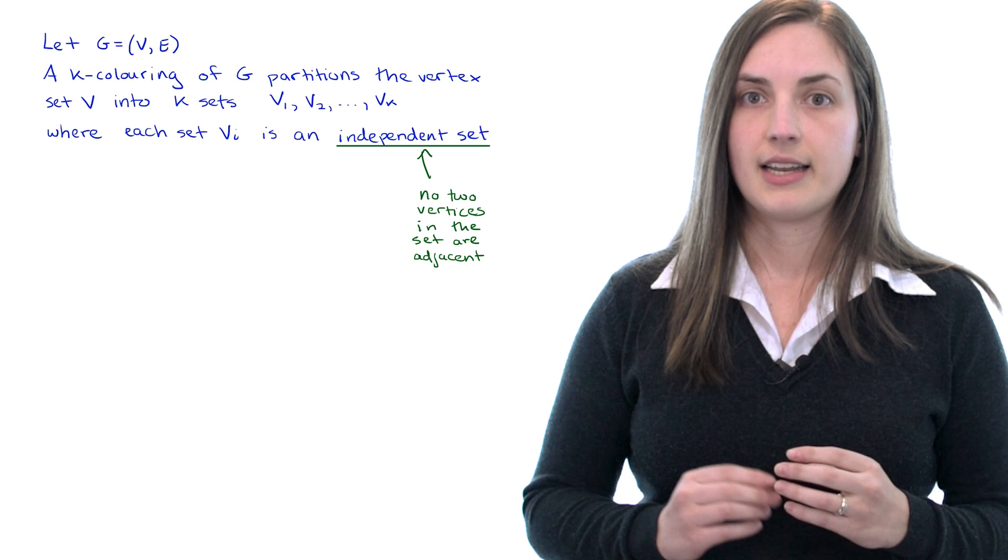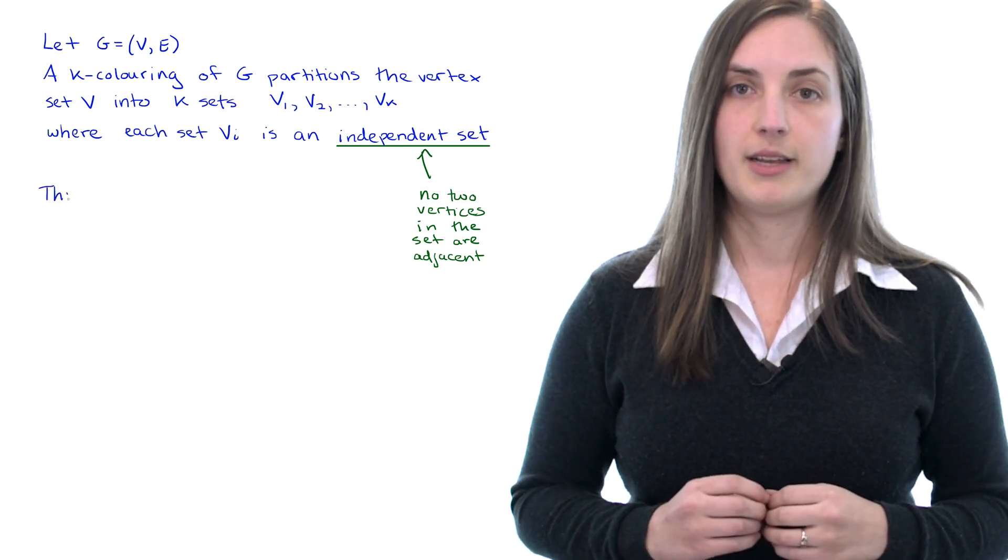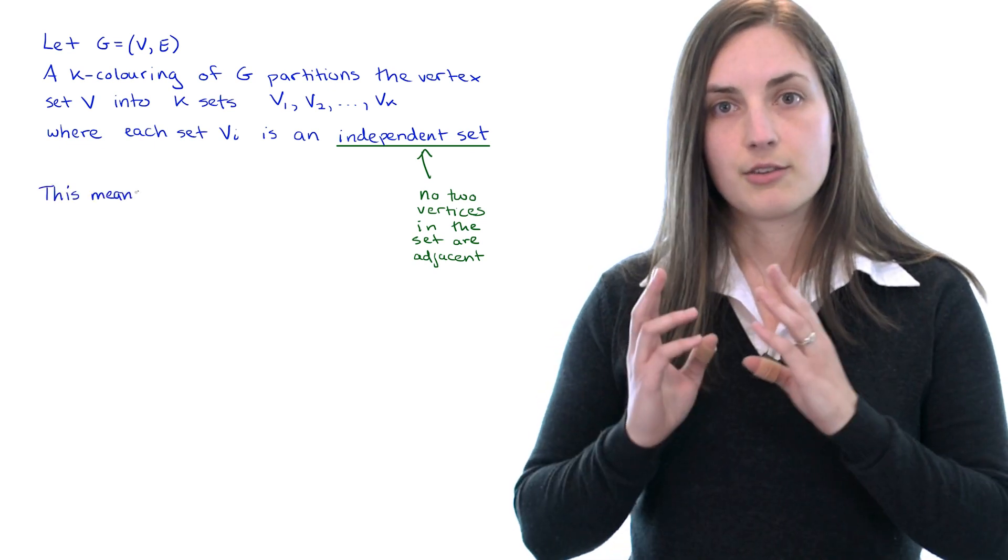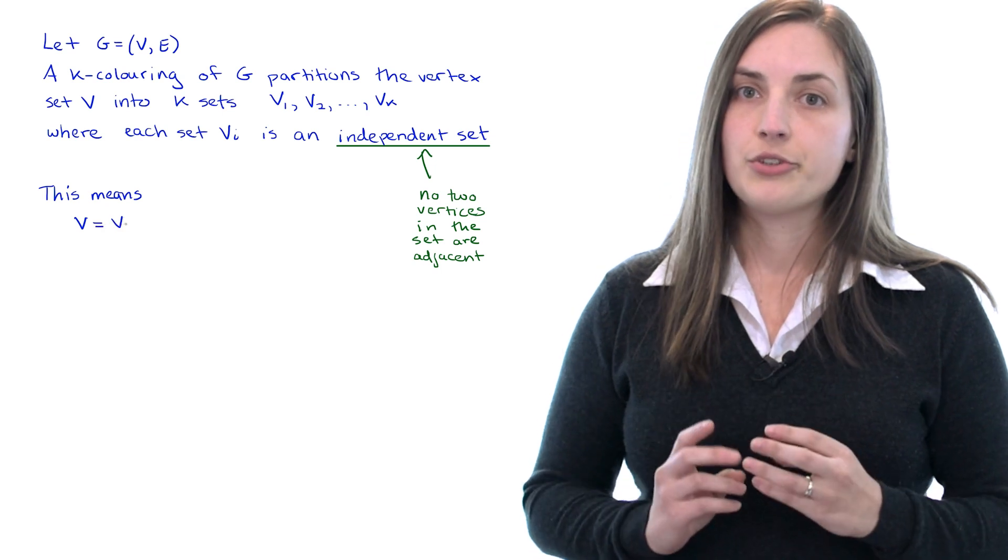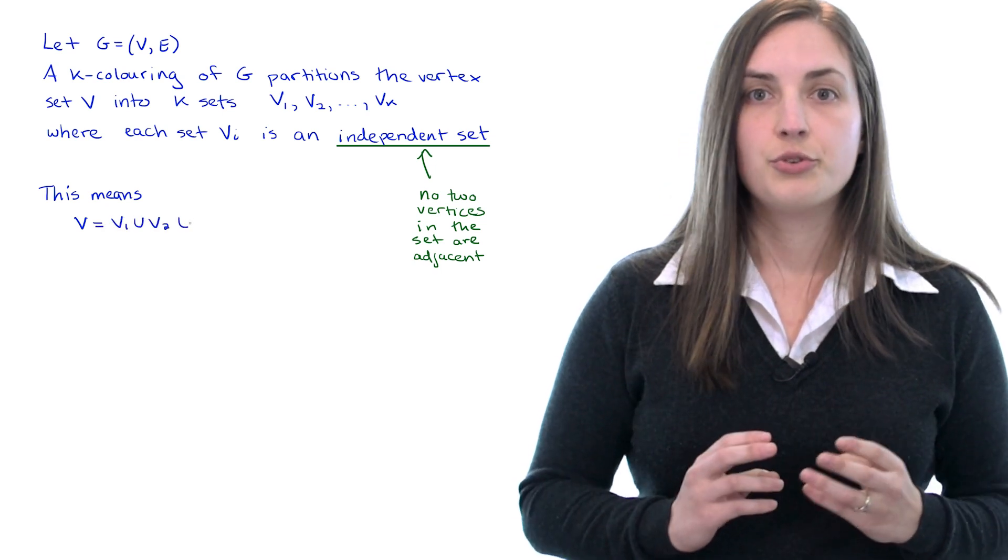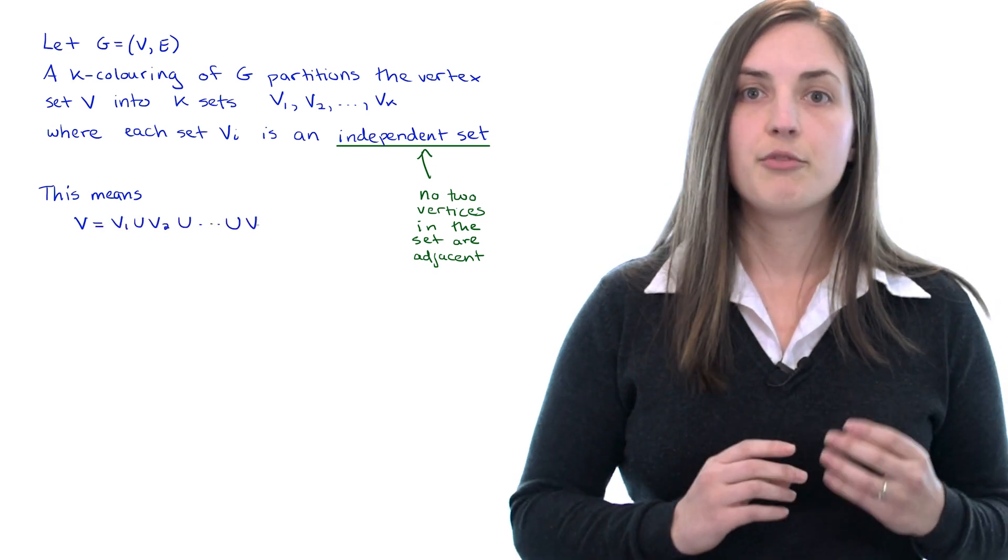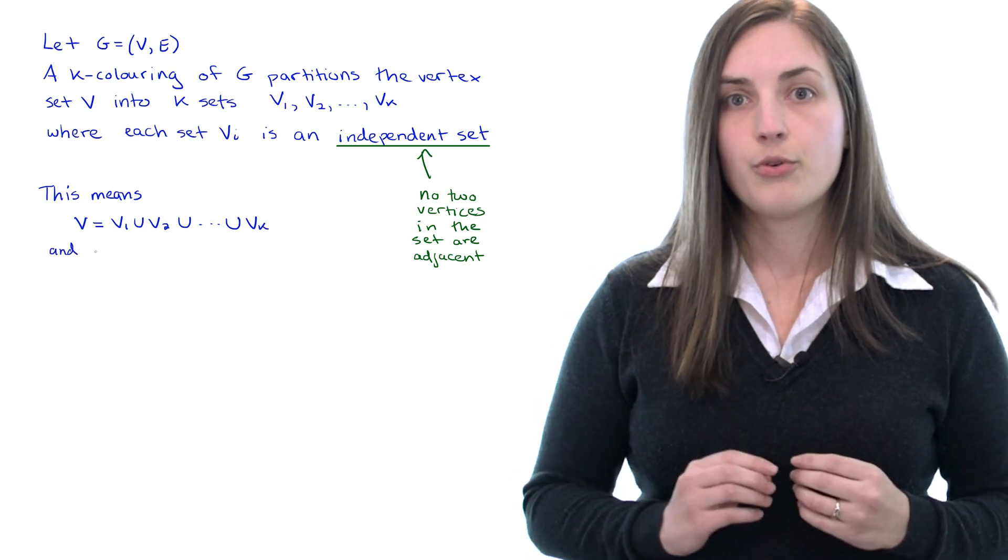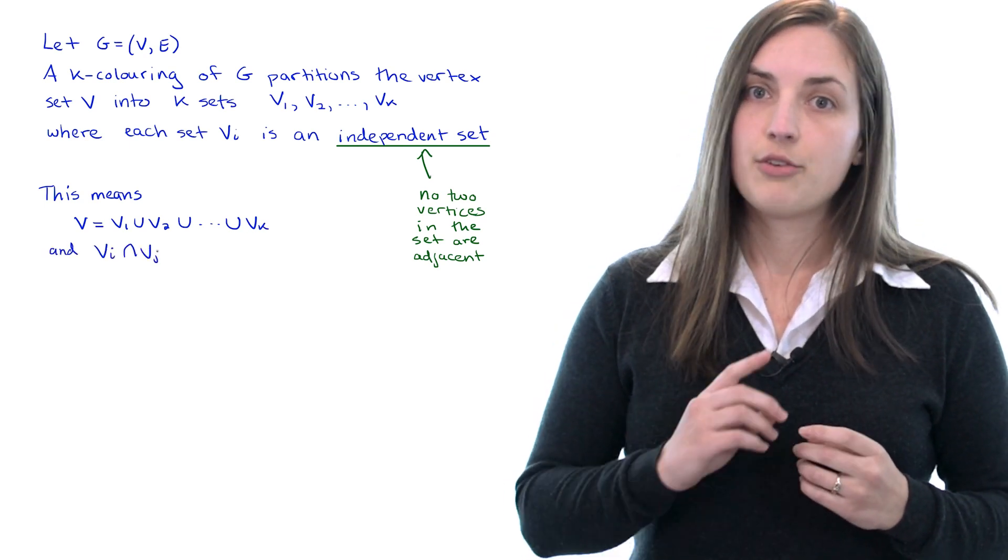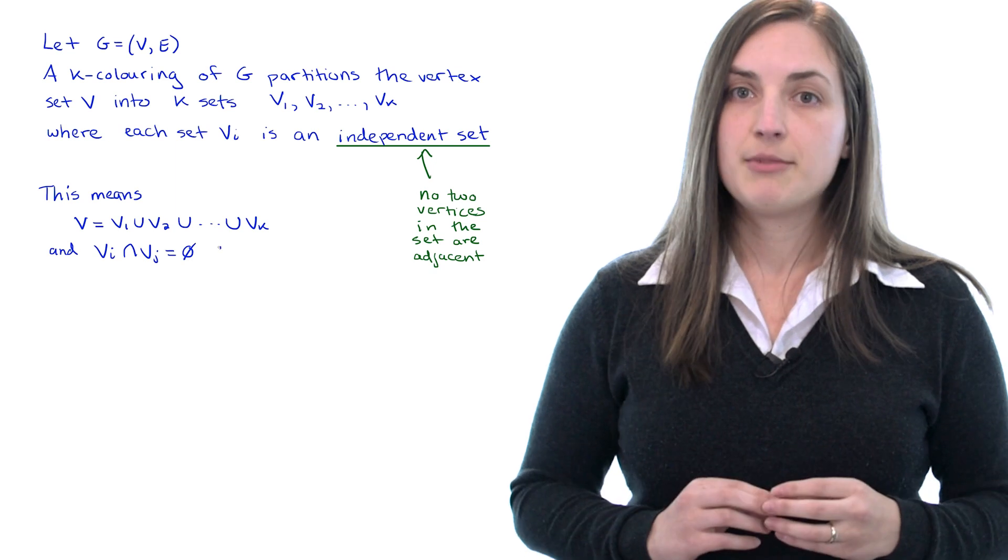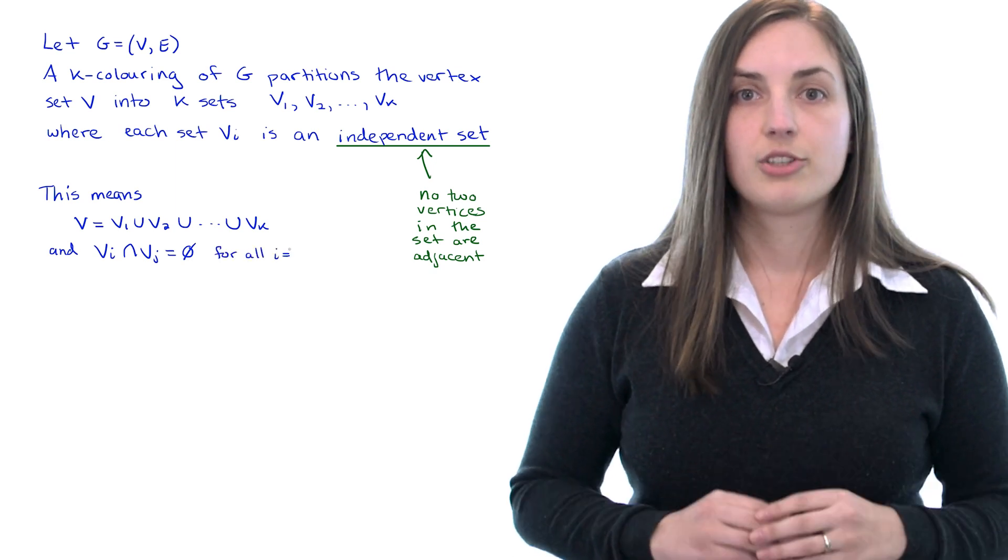The fact that the vertex set is partitioned into these independent sets tells us that the vertex set V is equal to V_1 union V_2 union all the way up to union V_k. And also V_i intersect V_j is equal to the empty set for all i not equal to j.